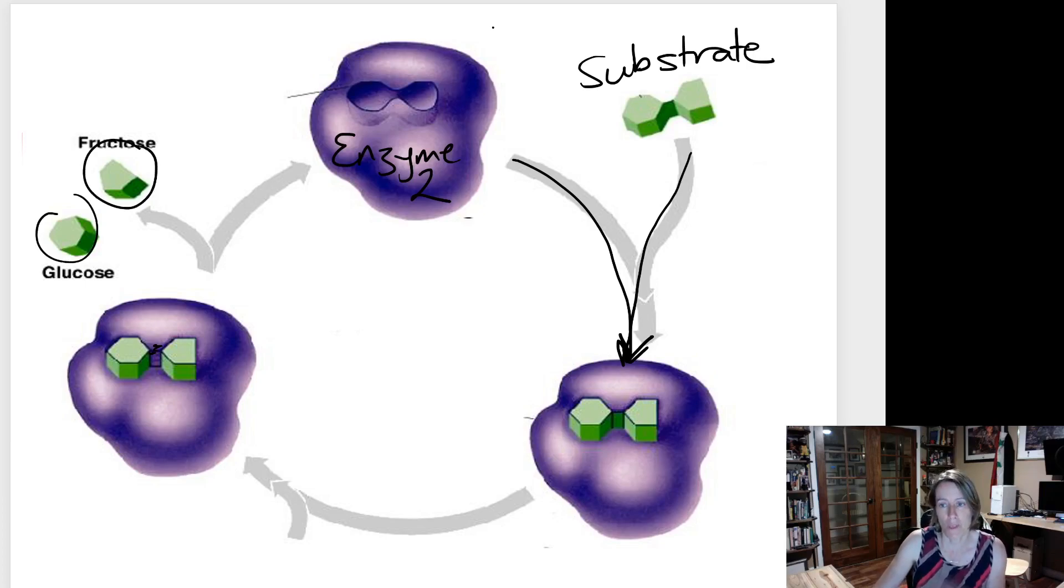The two products are released, off they go to wherever they need to go in the cell. And the enzyme, here it is unchanged, can do the job all over again. It hasn't been used up, hasn't been modified, hasn't been altered. It's hanging out in the cell ready to do the job for a second time should another substrate molecule end up in the active site.